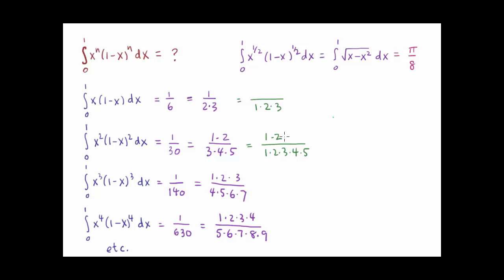But there was already a copy of one times two in the numerator, and so we get, in this case, two factorial times two factorial over five factorial.